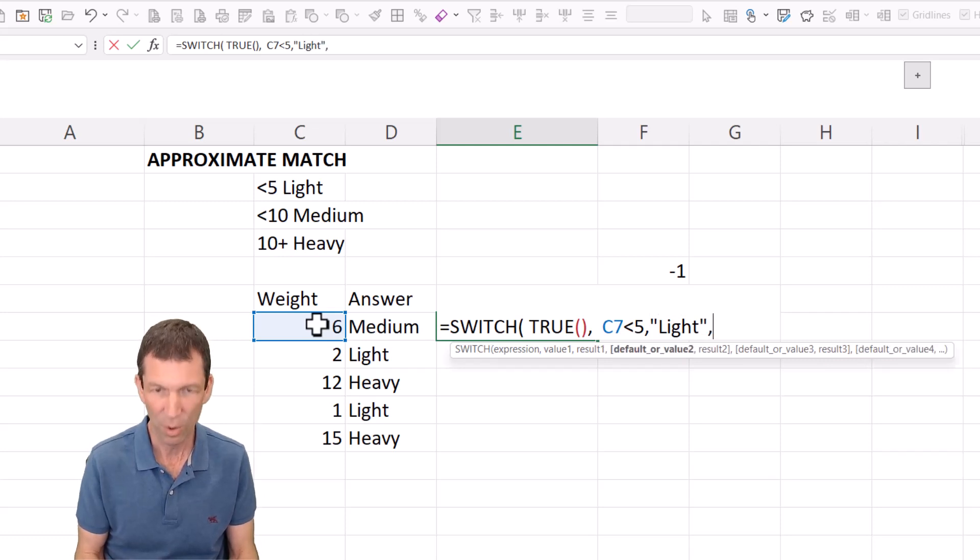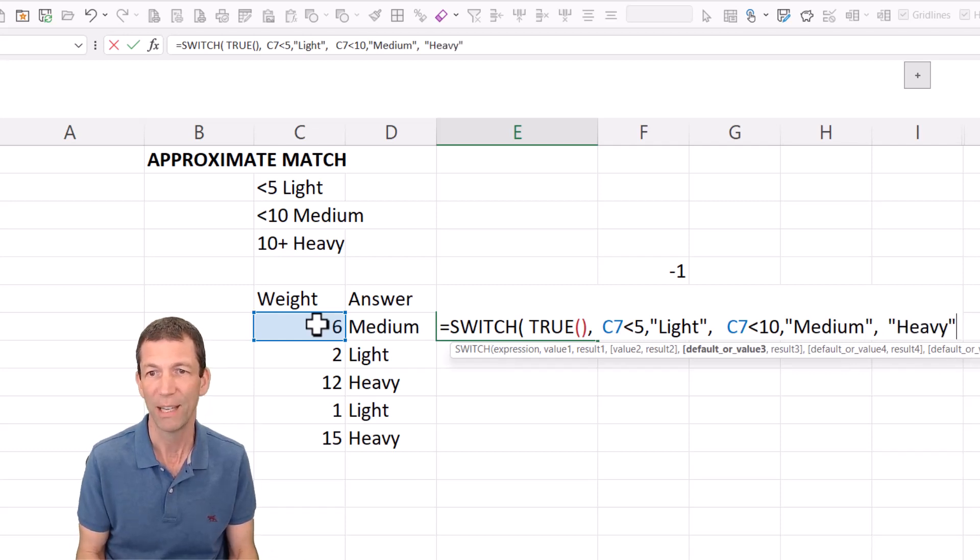Okay comma and then you go if C7 is less than 10, then it's medium. Okay and as I said before you can just put a heavy on the end.